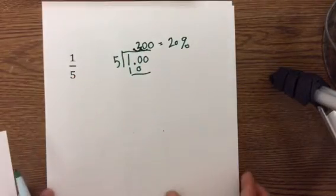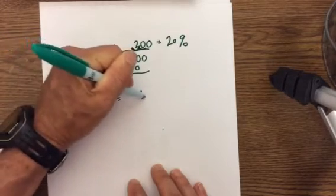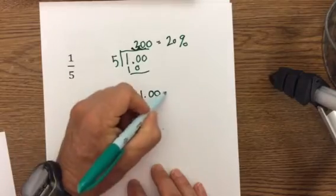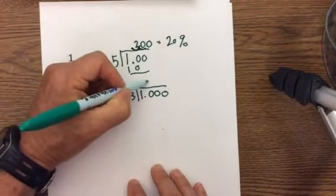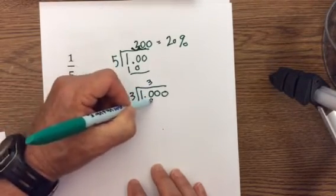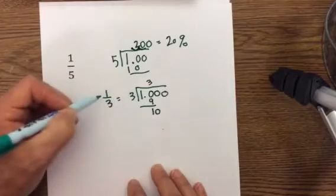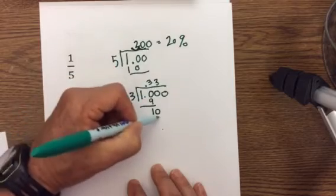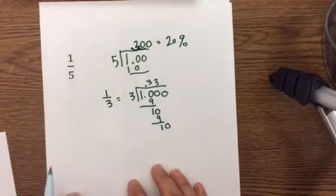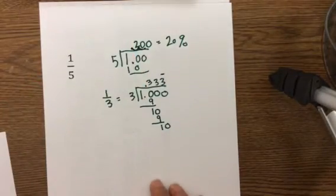Sometimes you may get a number that doesn't work out exactly like this. For instance, let's look at 1 third. Write the 1, write out the zeros, put 3 on the outside. 3 goes into 10 three times; when you multiply 3 times 3, you get 9, so you have 1 left over. Bring the 1 down and you have 10 again — 3 goes into 10 three times, and this will continue to repeat. So this would be a repeating decimal, and you can just put a bar over the repeating digit.